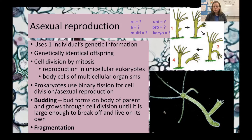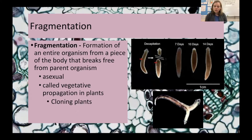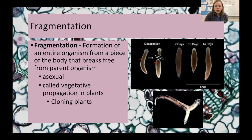A process that comes along later in more complex multicellular organisms is fragmentation. Fragmentation is when an organism can reproduce from a part of itself that breaks free of the body. For example, simple little worms called planaria have cells that can regenerate — basically every cell in their body is a stem cell. If they are decapitated, they can grow a new head on one side and a new tail on the other in about two weeks. This is asexual — still only one parent involved.